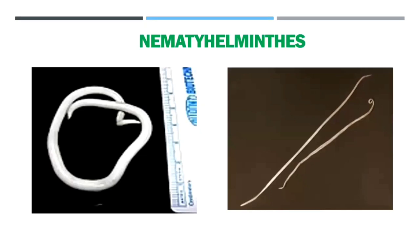The next phylum is Nemathelminthes (Nematoda). The body is also bilaterally symmetrical and triploblastic, but not flat — they are round. There are tissues but no real organs. A sort of body cavity or pseudocoelom is present, but it is not made from mesoderm, so it is not a true coelom. These are familiar as parasitic worms causing diseases such as elephantiasis or filariasis, or roundworms and pinworms in the intestine.